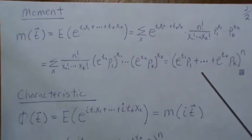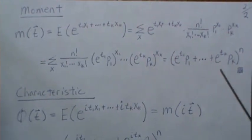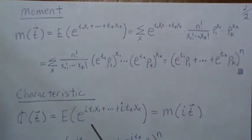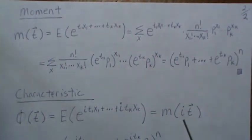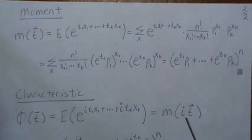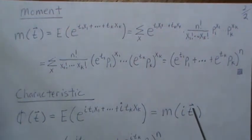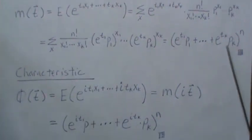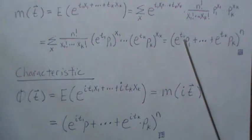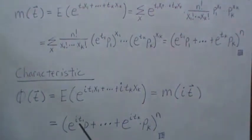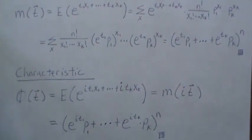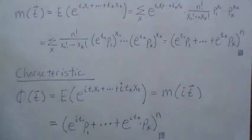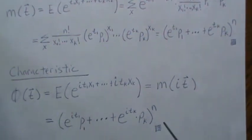And then the characteristic function becomes easy once you know the moment-generating function. It just says evaluate the moment-generating function and put an it—remember this is a vector—in here. That's what we do. So instead of t1, we get it1 p1, and we do that for all k. So this is the characteristic function of a multinomial distribution.